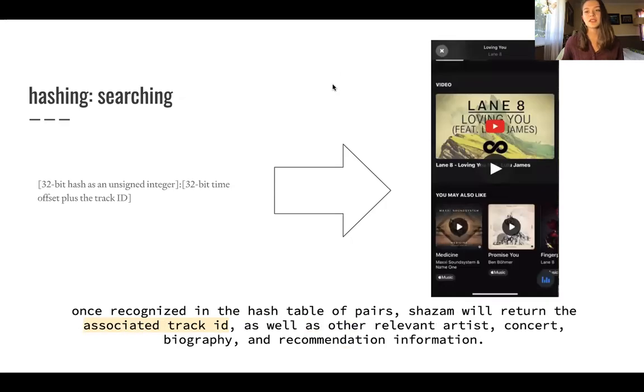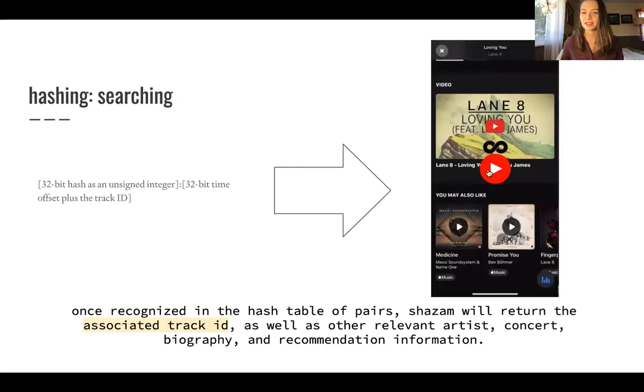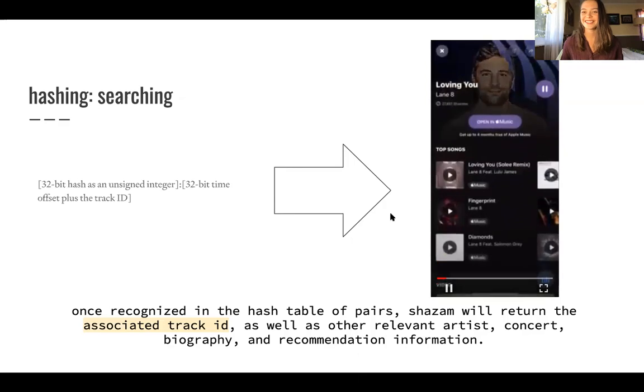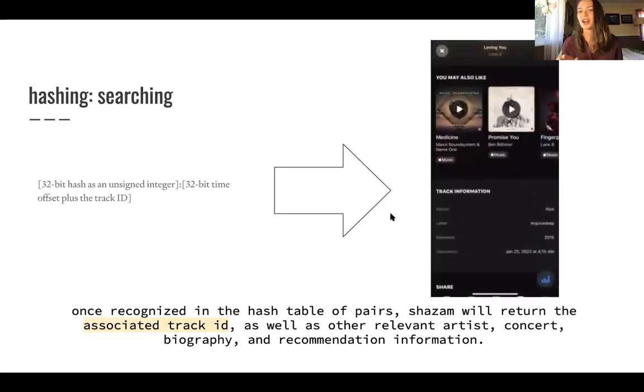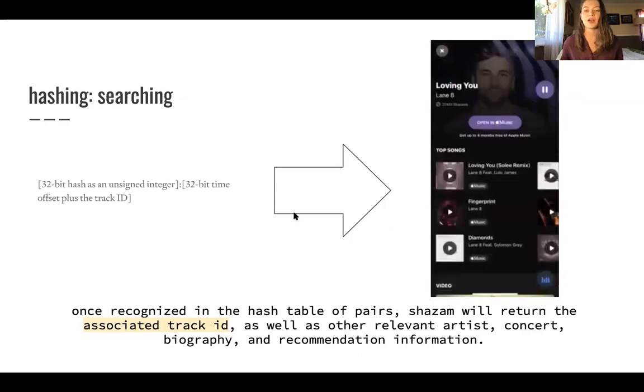So this is an example of what happens when you have a song that gets recognized. Once recognized in the hash table pairs, Shazam will return the associated track ID as well as other relevant artist concert biography and recommendation information. So I'm going to play this, this is a screen record of Shazam. This is a song and you can see recommendations, track information, and then also a way to share.